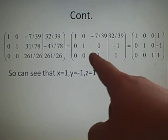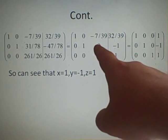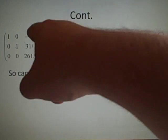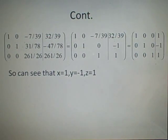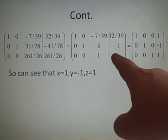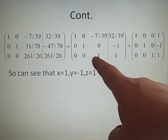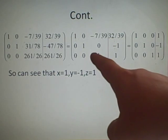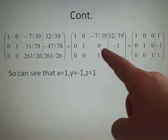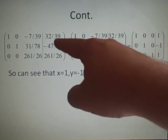Our next job is to make this equal 0. So because we've got our 1 here and 1 here, if we subtract 31 over 78ths of this row, that'll be a 0. And then we have to subtract 31 over 78ths from here.